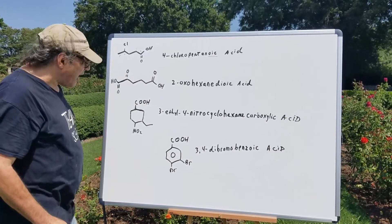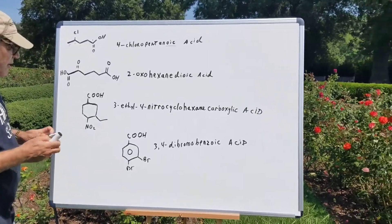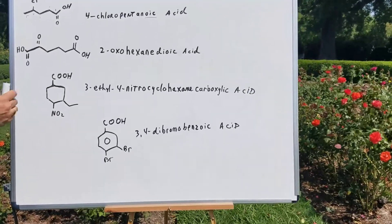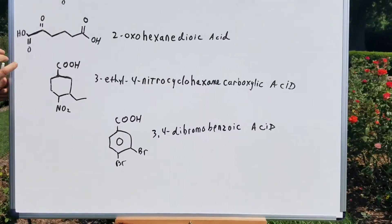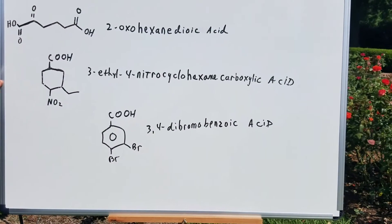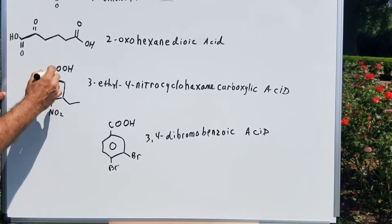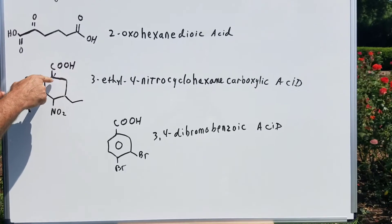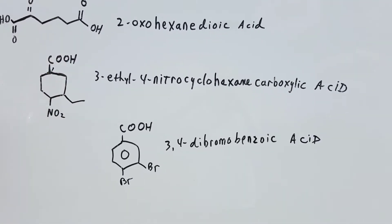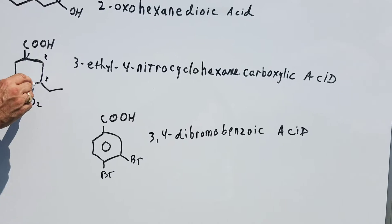The next one, I think, is an interesting one. This is a cyclo compound. Normally, the carbon with the carboxy acid group is number one. But when you're doing a ring, the carbon bearing the carboxy group is number one. So we're going to number it around.